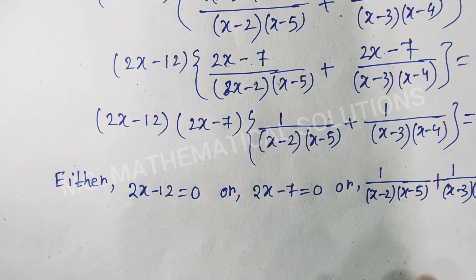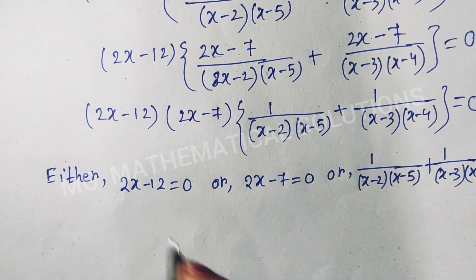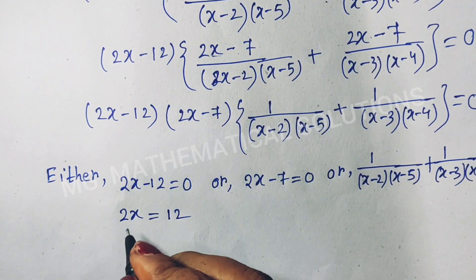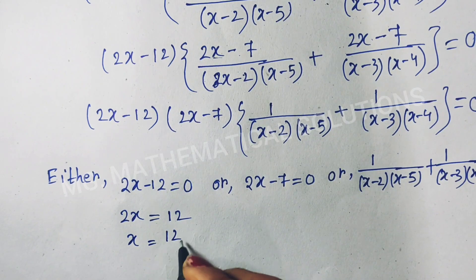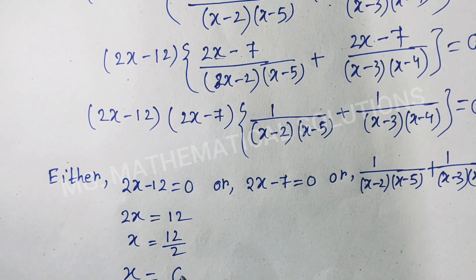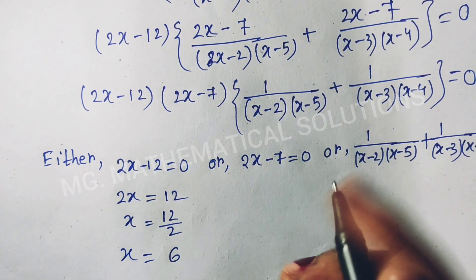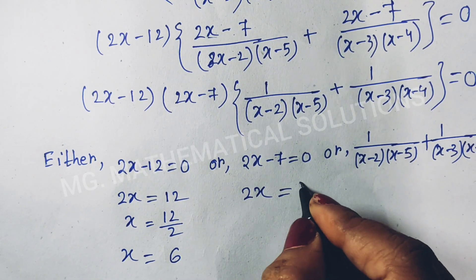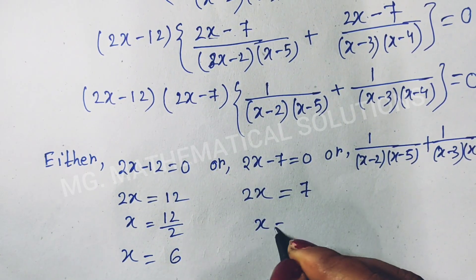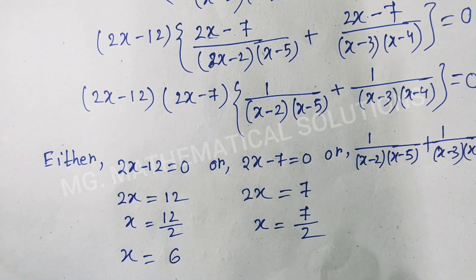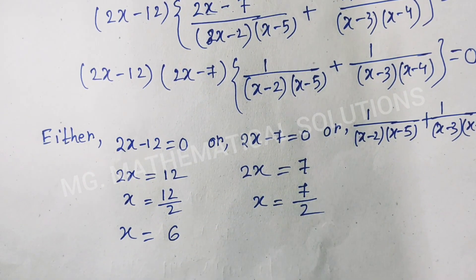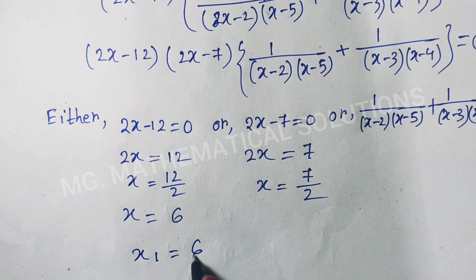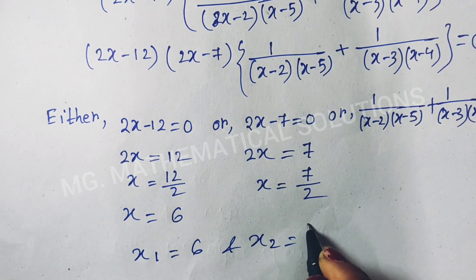From 2x minus 12 equal to 0, we get x equal to 12/2, so x equal to 6. And from 2x minus 7 equal to 0, we get x equal to 7/2. So here we get two values: x1 equal to 6 and x2 equal to 7/2.